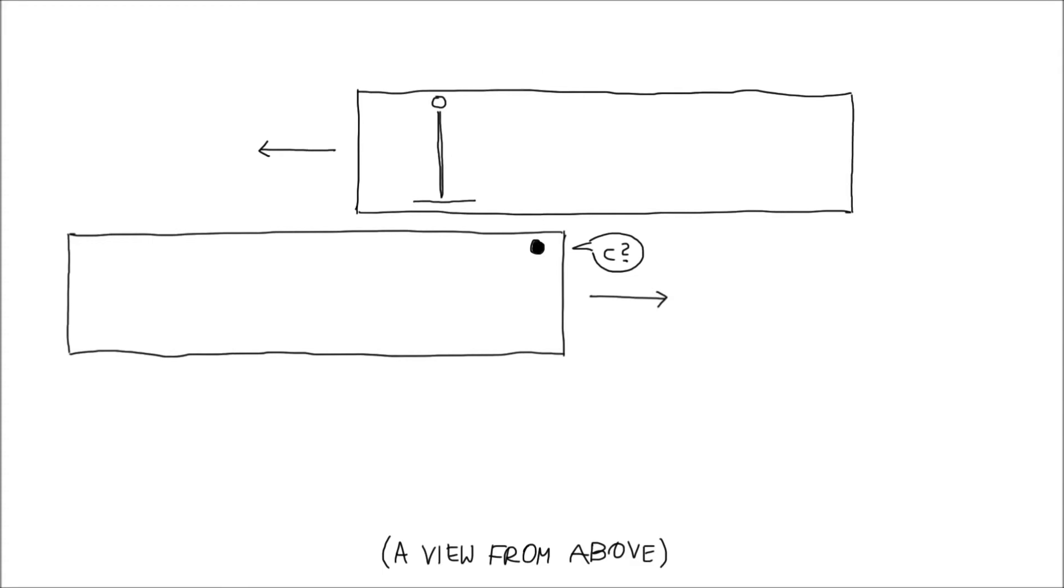An alternative explanation is that the time goes faster for you than for her. This would mean that for you more time has passed between the departure and the return of the light beam. The light beam has to cover a longer distance but also has more time to do so.